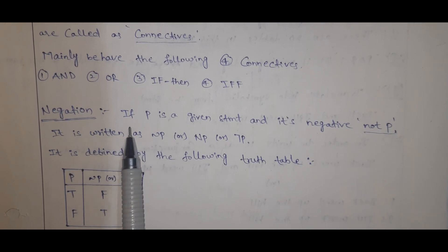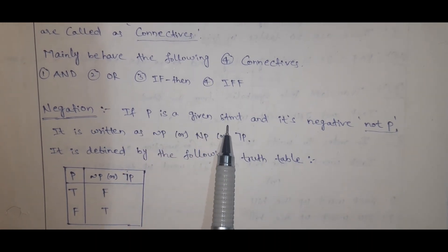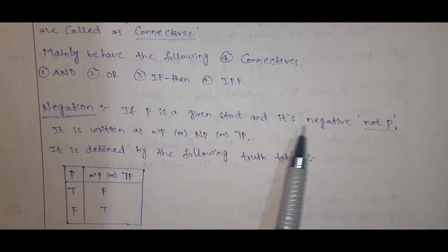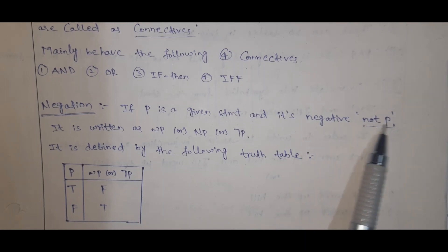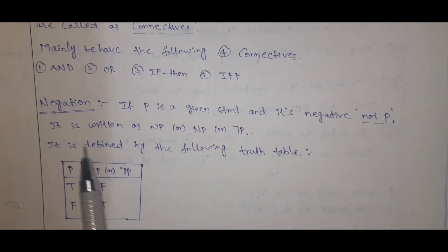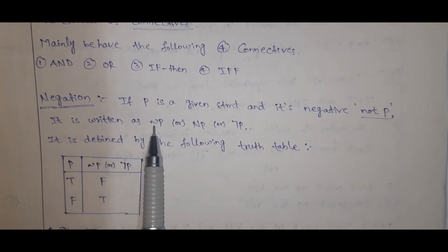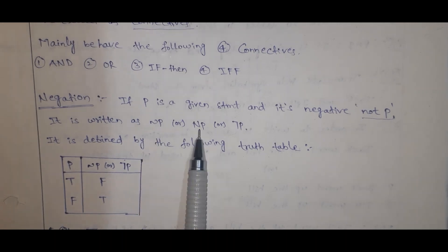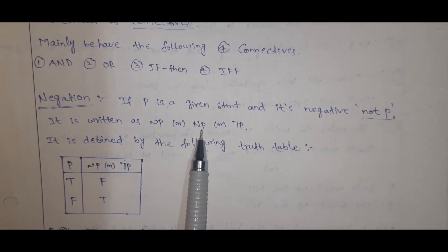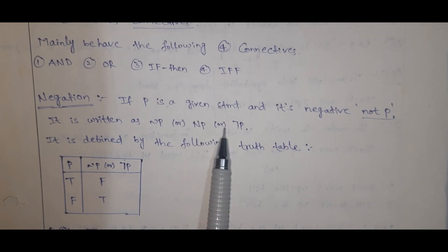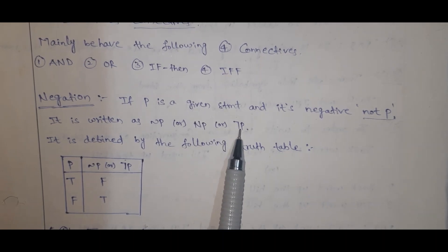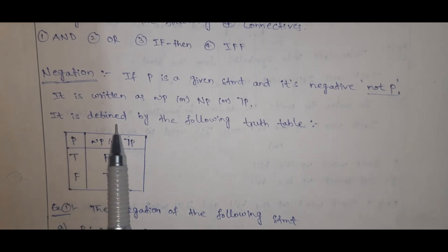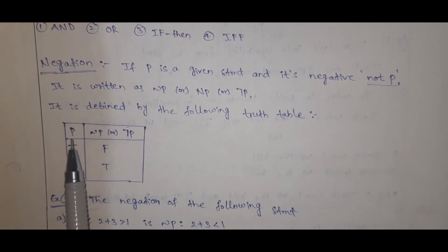Negation definition: if P is a given statement, then its negation means NOT P. It is written as the negation symbol ¬P, or NPN, or NOT P. It is defined by the following truth table.